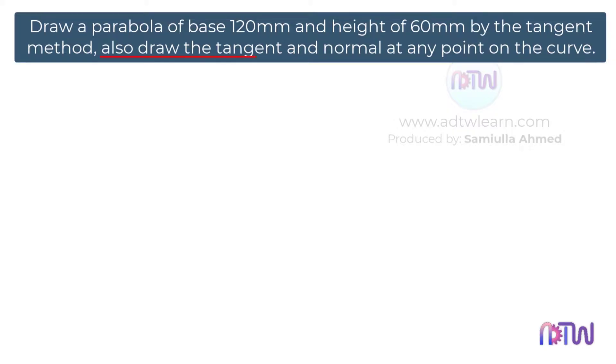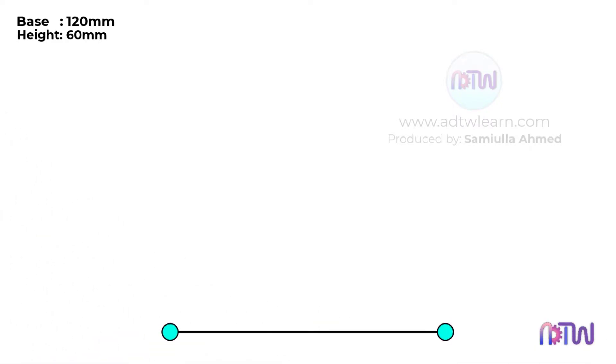Also, draw the tangent and normal at any point on the curve. Take a ruler and draw a horizontal line of 120mm in length. Label the endpoints of this line as A and B.